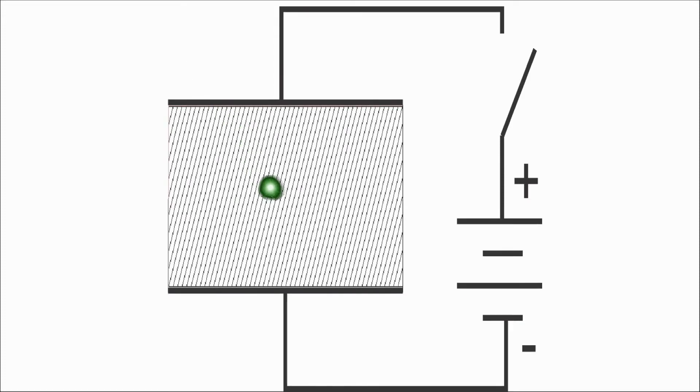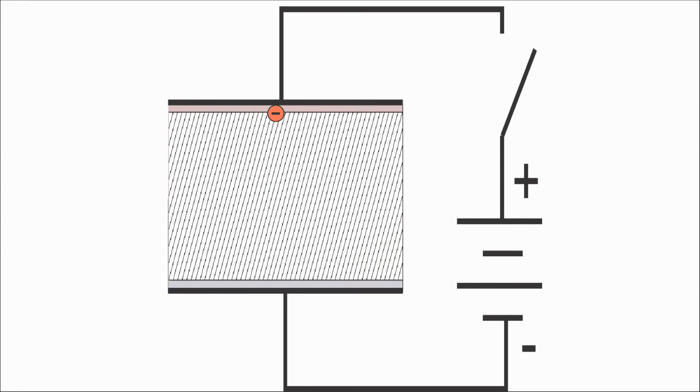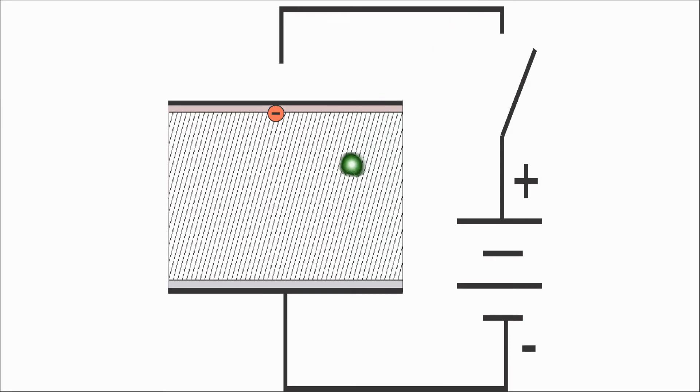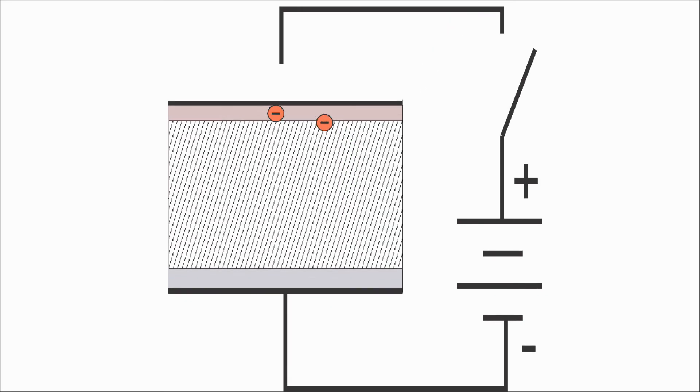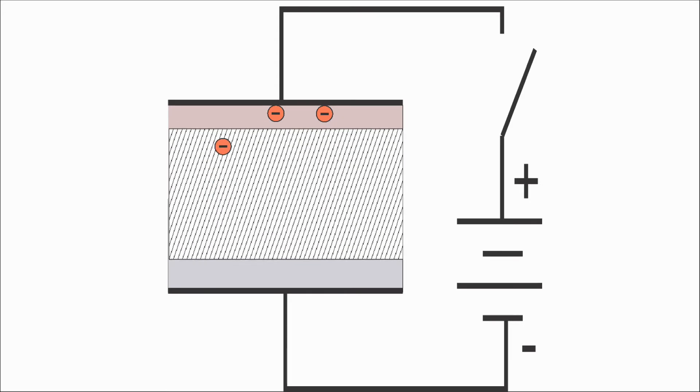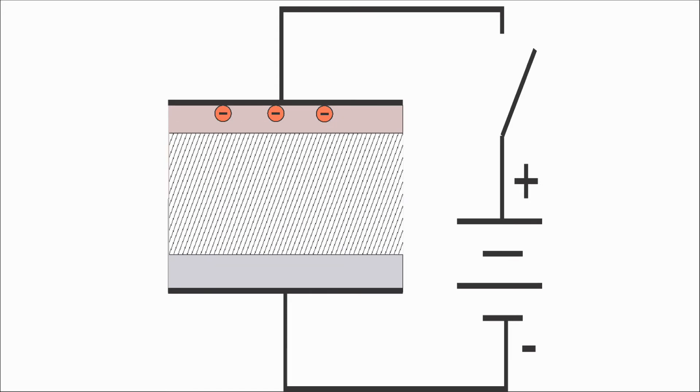Now when a photon comes in and is absorbed in the depletion region, it frees an electron. The freed electron is swept out of the depletion region but remains captured in the silicon. In this way, the photodiode accumulates the photo-generated charge.